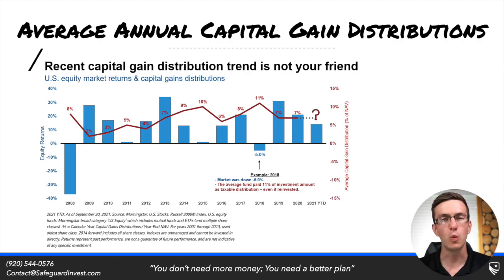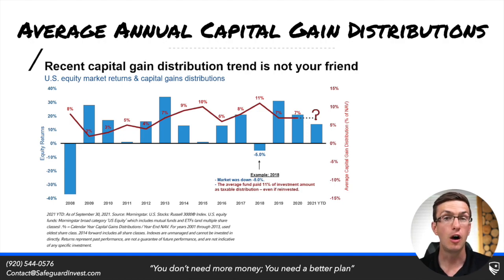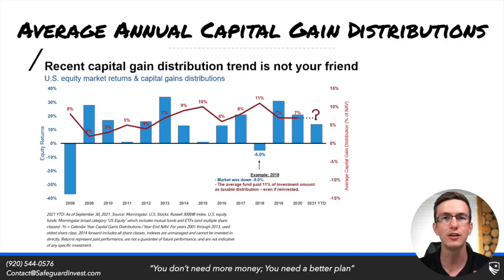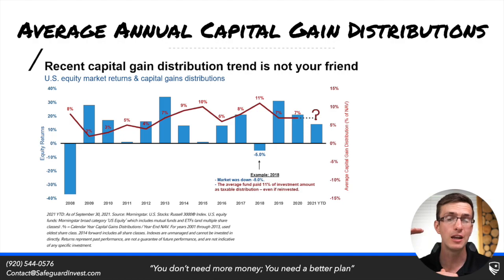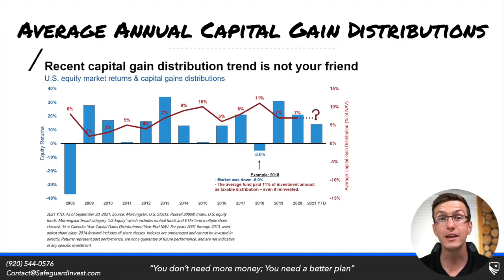Each and every year, whether you want it or not, mutual funds distribute capital gains to investors, oftentimes throwing a tax torpedo into their situation. For example, a surprise capital gain distribution at year-end could push you above a Medicare income threshold, potentially resulting in a $1,000-plus expense from a Medicare premium increase.